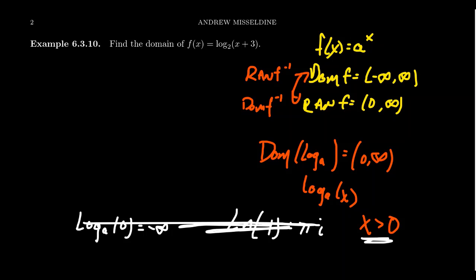So if, for example, we have a function f(x) equals the log base 2 of x plus 3, very similar to finding domains of square root functions, we have to make sure that the operand, the input, is positive. So to find the domain here, we have to solve the inequality x plus 3 is greater than 0, which is easy enough.